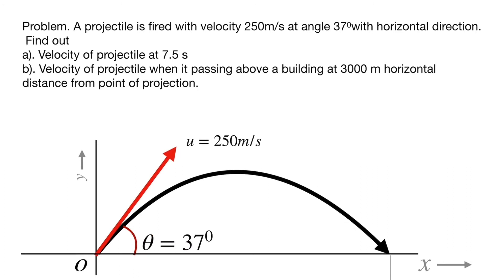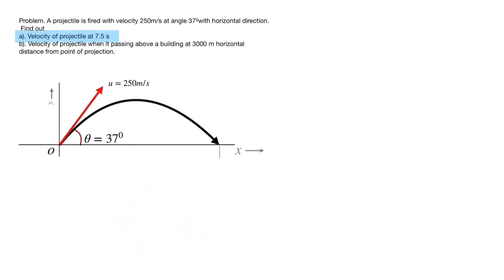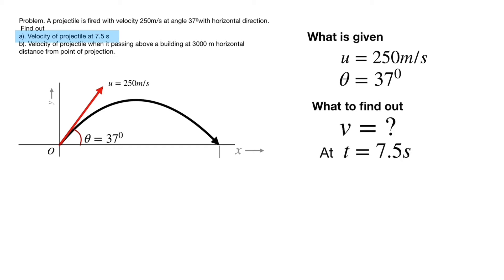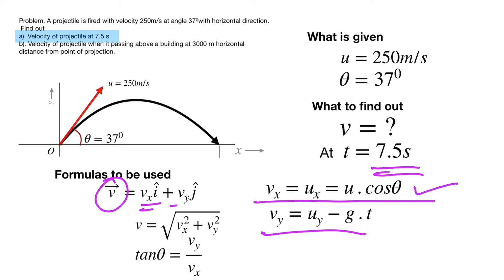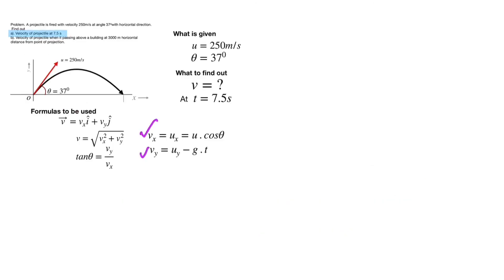A projectile is fired with initial velocity 250 meters per second at angle 37 degrees with horizontal. In part A, we have to find the velocity of the projectile at 7.5 seconds. What is given: initial velocity and angle of projection. We need to find velocity at t = 7.5 s using the formulas for vx and vy, where vx = u·cos(theta) is constant and vy is calculated using the equation of motion for constant acceleration.